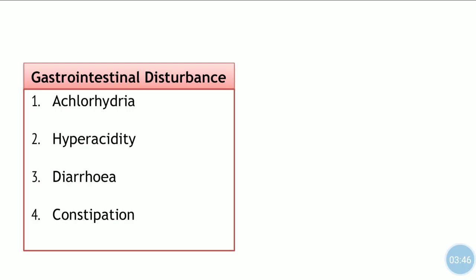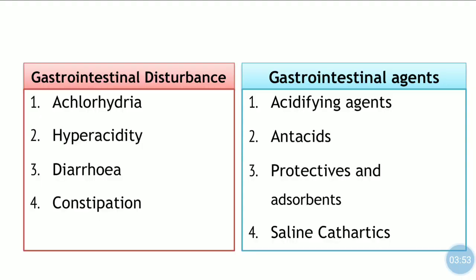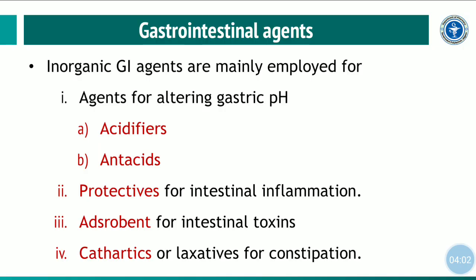These are the four gastrointestinal disturbances, and the inorganic gastrointestinal agents are: acidifying agents, antacids, protectives and adsorbents, and saline cathartics. These agents are mainly employed for altering gastric pH — acidifiers decrease gastric pH, antacids increase gastric pH, protectives address intestinal inflammation, adsorbents target intestinal toxins, and cathartics treat constipation.